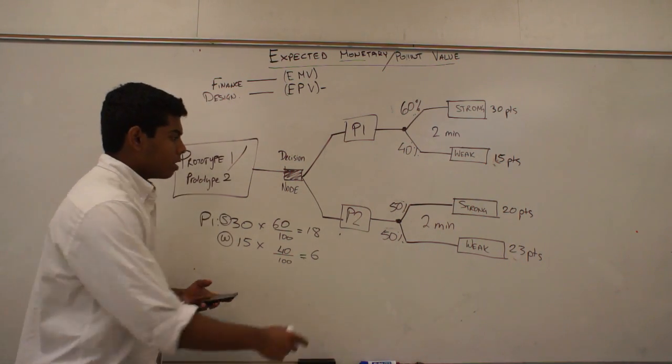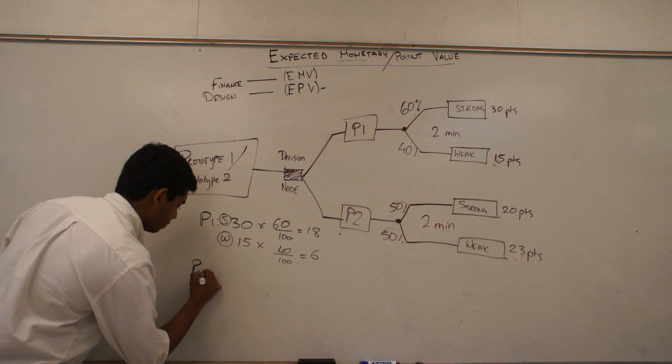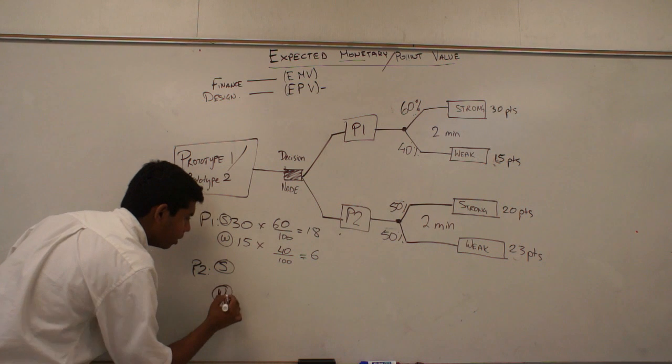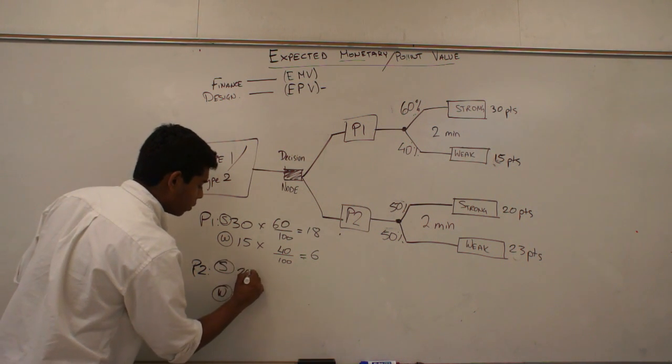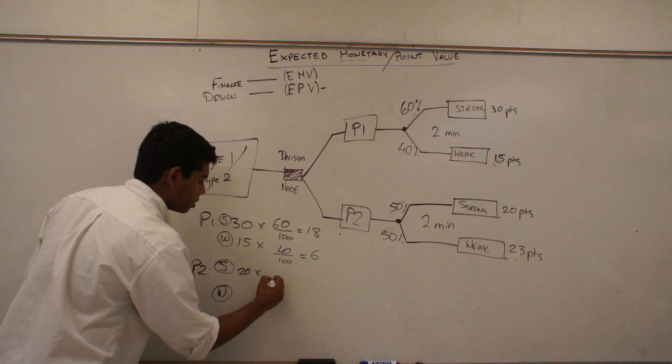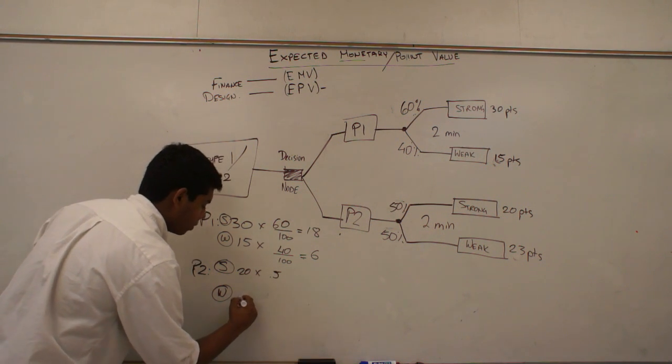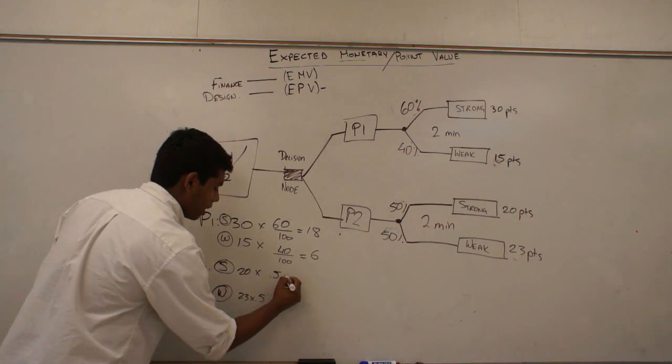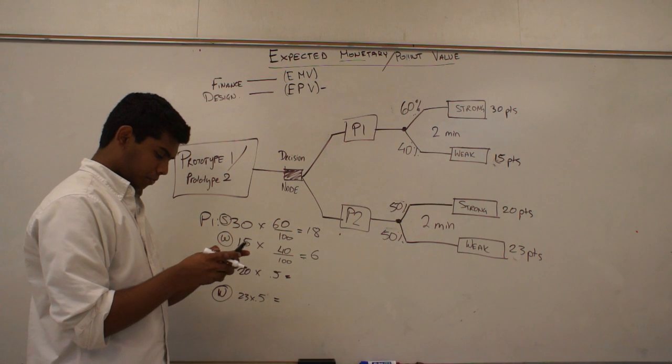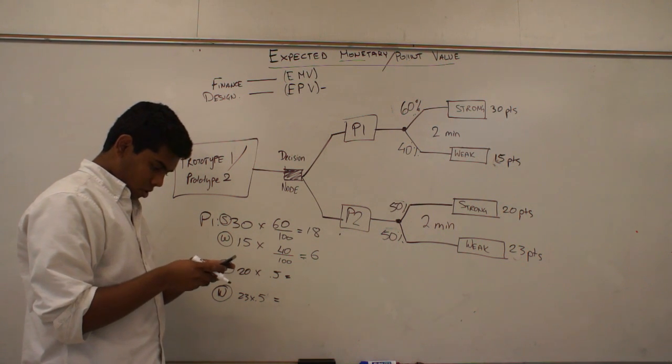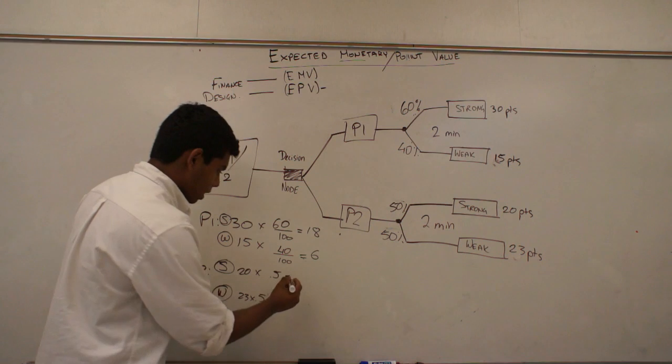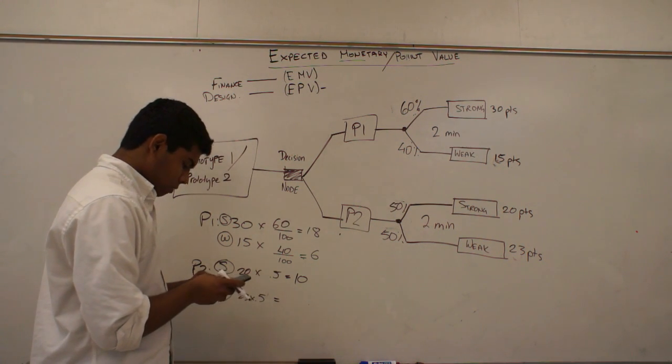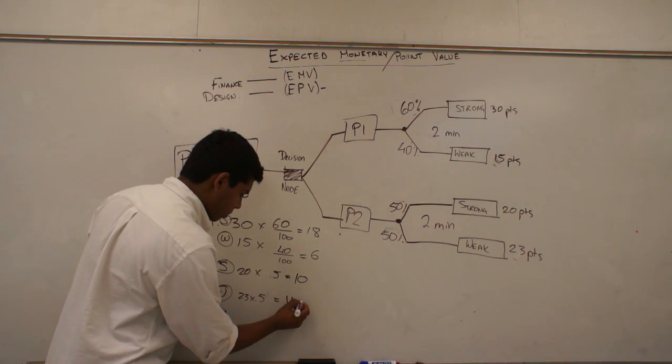Let's do the same thing for prototype two. I have my strong scenario and my weak scenario. In strong scenario, it can make 20 points, but the chances are 50-50. Whereas, the other one is 23 points, and the chances are 50-50. So that would equal to 20 times 0.5, which equals 10. And then 23 times 0.5, which equals 11.5.